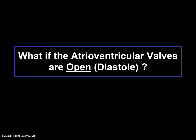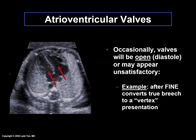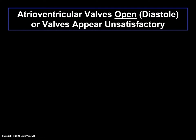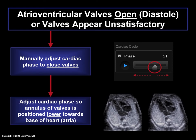Occasionally the valves will be open in diastole or appear unsatisfactory — for example, after FINE converts a true breech to a vertex presentation. The atrioventricular valves can be manually closed by adjusting the gray slider button. The cardiac phase should be adjusted so that the annulus of the valves is positioned lower towards the base of the heart, or atria. Remember, most of the time FINE will automatically close the atrioventricular valves so you don't have to manually do this.